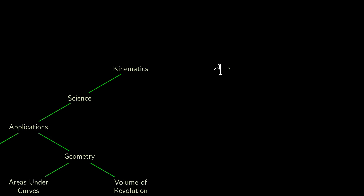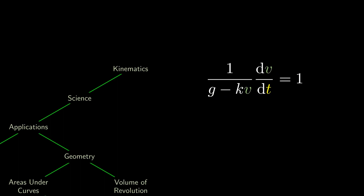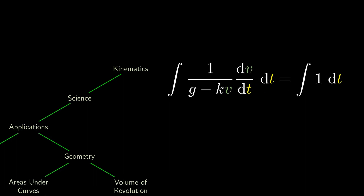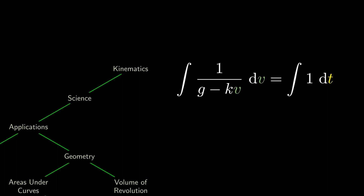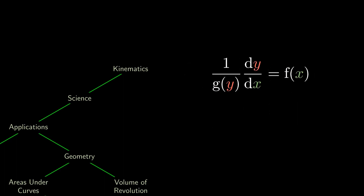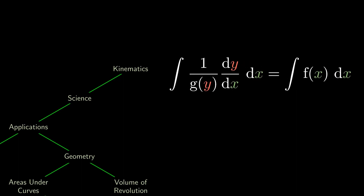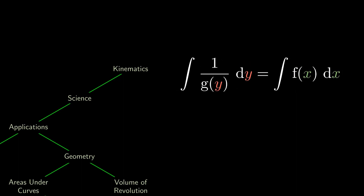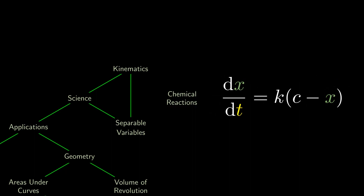A similar equation in kinematics arises when considering the motion of falling objects. We want to find the velocity v. To do this, we can divide out the v terms onto one side and integrate with respect to t. On the left side, we get an integral with respect to v, and on the right side, we get an integral with respect to t. More generally, we can separate out the y's from the x's and integrate both sides separately. This is known as the method of separable variables. Using this same technique, we can obtain the formula that governs first-order rates of reactions.